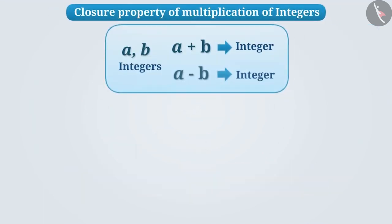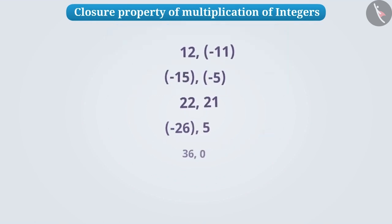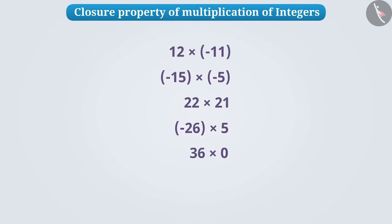So far, we have learnt that the integers are closed under addition and subtraction. Now, let's find out whether integers are closed even under multiplication. For this, we will take a few pairs of integers and multiply them. As you can see, the product of all these pairs is an integer.